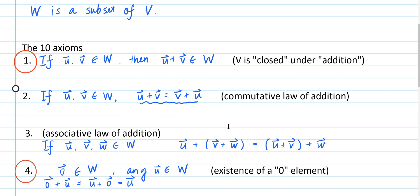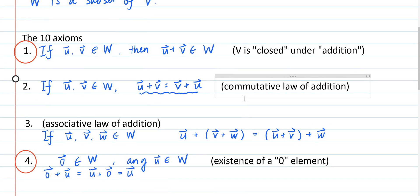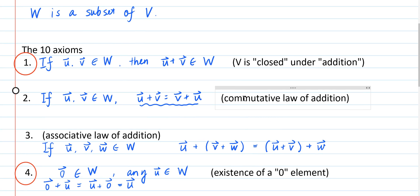On the other hand, for the four axioms that are circled here, they're no longer automatically true just because W is a subset. For example, if we look at axiom 1, if we pick two elements in W, the sum of those two elements, even though they are still in V because V is closed under addition, they may not be in W.